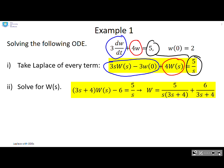Second, solve for w(s). So I'm simply going to rearrange it and extract the w's. And when I do that, you'll see I end up with this expression here: w = 5/(s·(3s+4)) + 6/(3s+4). Now you can always pause the video if you want to look at those steps a bit more slowly.